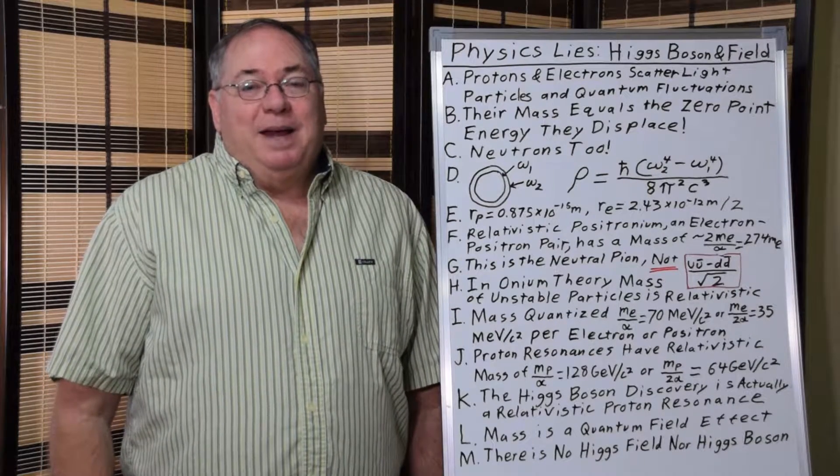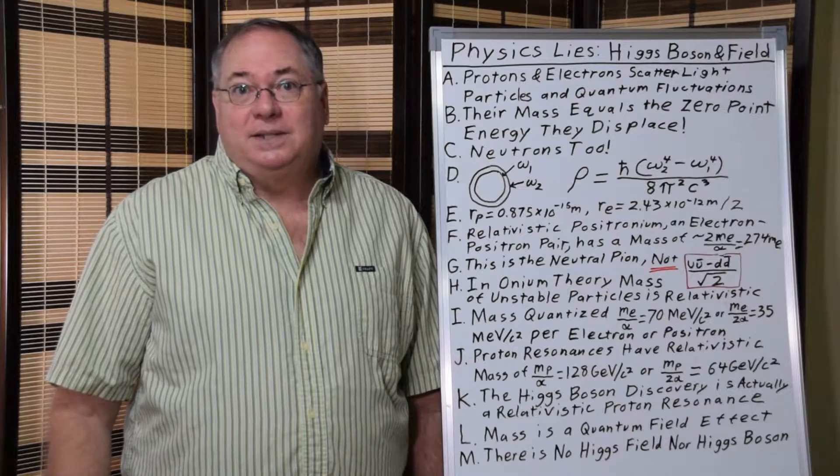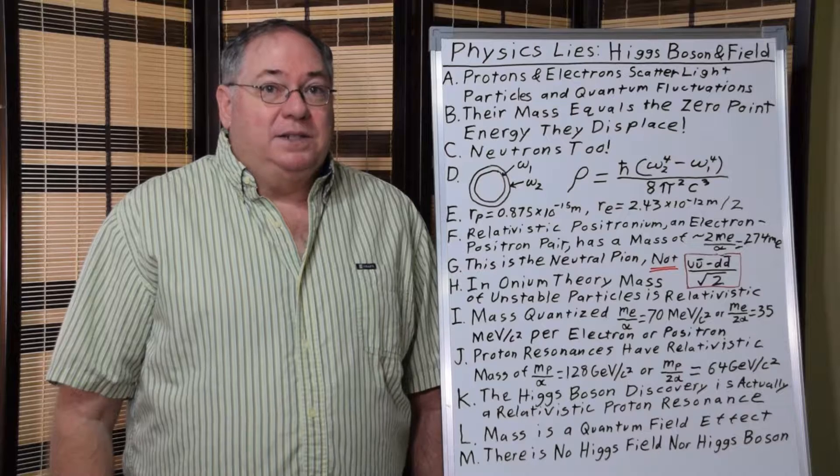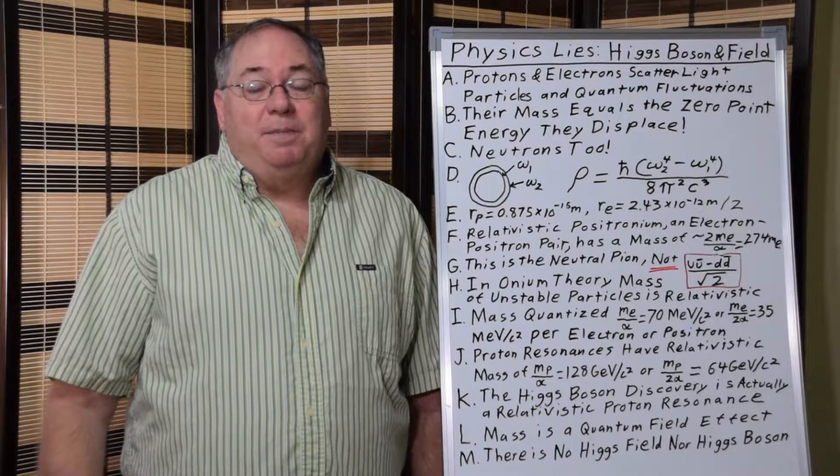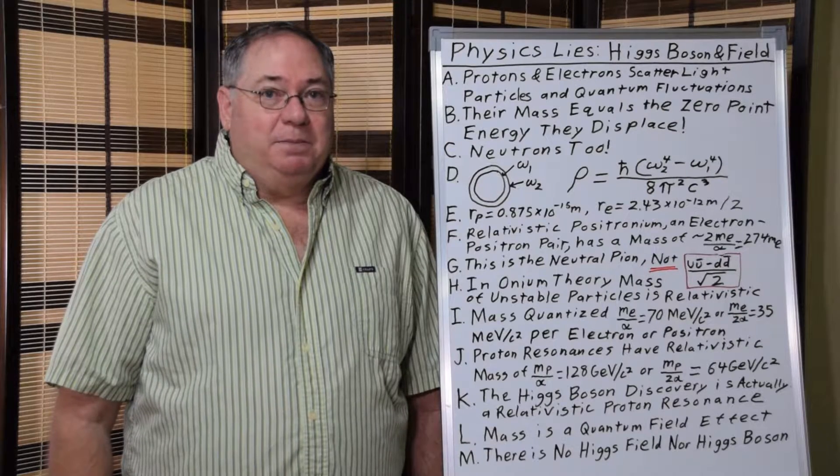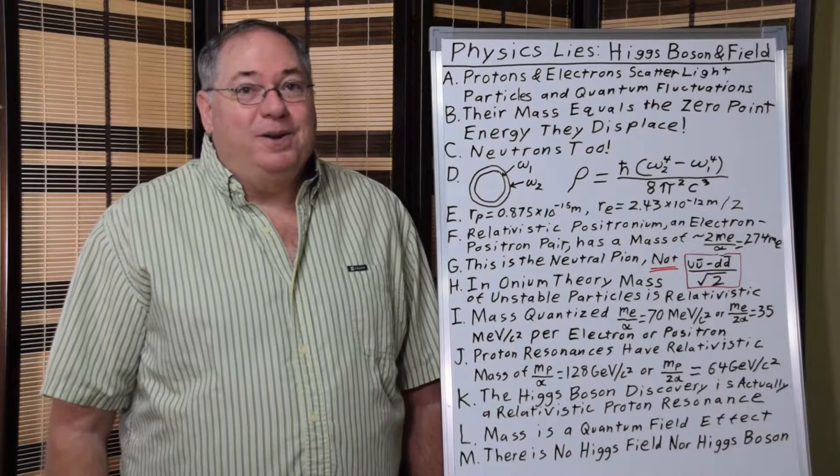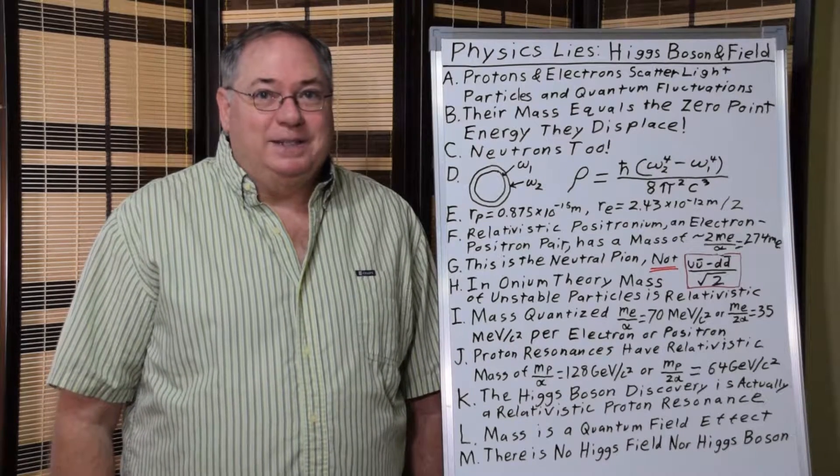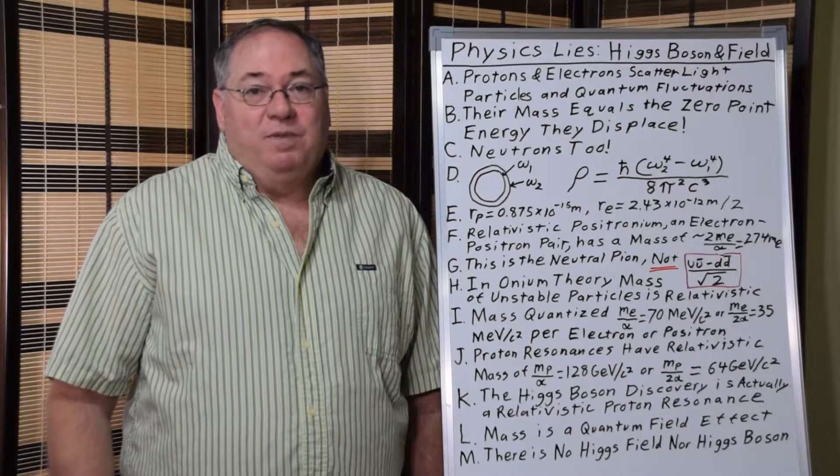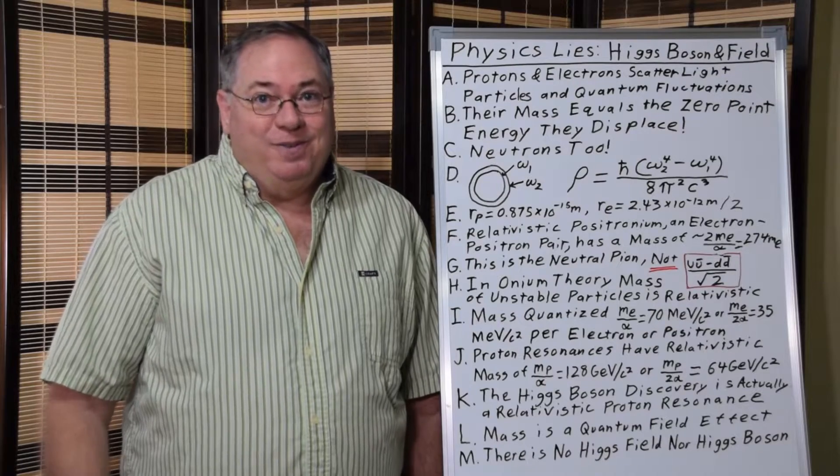Now these lies came about because physicists were trying to describe mass in a fundamental way. And currently mass is treated as an intrinsic property of particles and they don't know exactly how mass comes about. So they thought, why not invent another field and another particle that we pretend exists and explains it, rather than try to get to it in a more fundamental way without inventing a new particle or a new field.